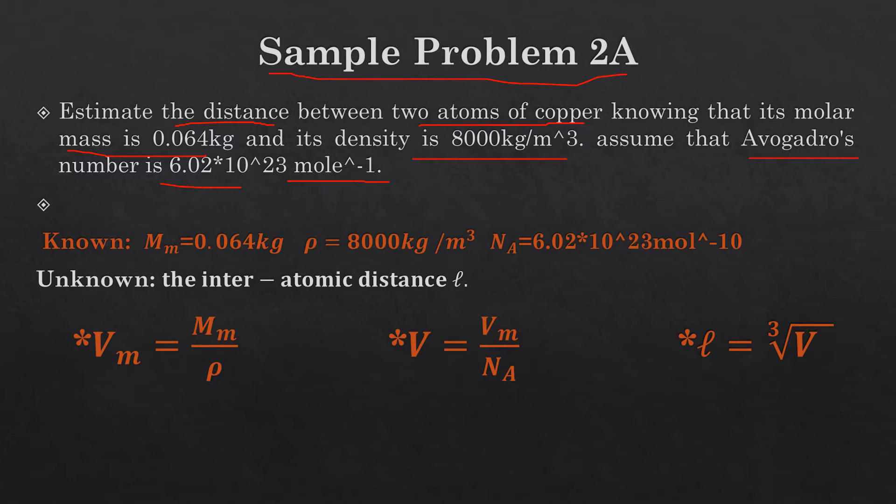Students, try to know what we have and what we have to find. Estimate the distance means find the distance between two atoms. Here, the distance is l, the atomic distance, and this is unknown. The known values we have are molar mass, density, and Avogadro's number.